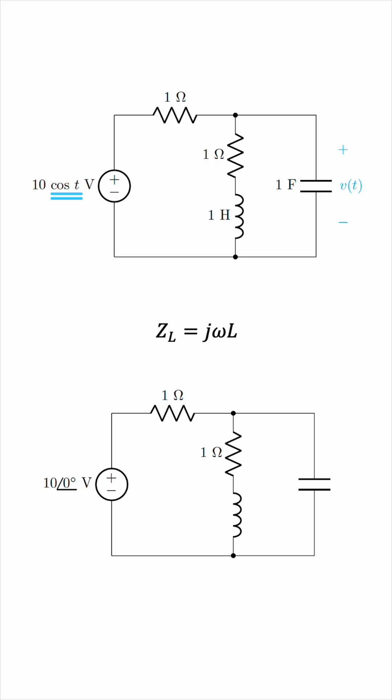Omega can be obtained simply by looking at the omega of the source. Omega, the radial frequency, is the factor next to T, the multiple of the independent variable, time. In this case, it's just 1, so omega is 1 radian per second, and we can substitute 1 henry for the inductance, giving us an impedance of J ohms.